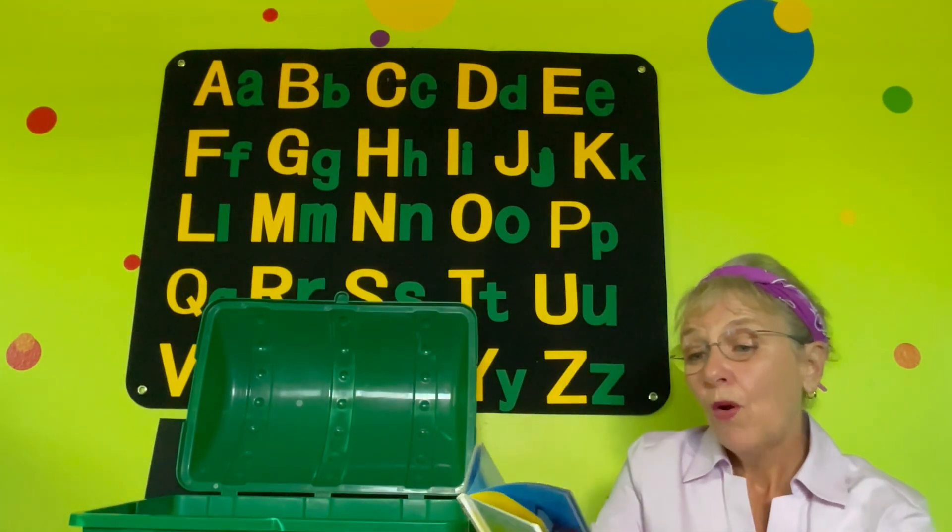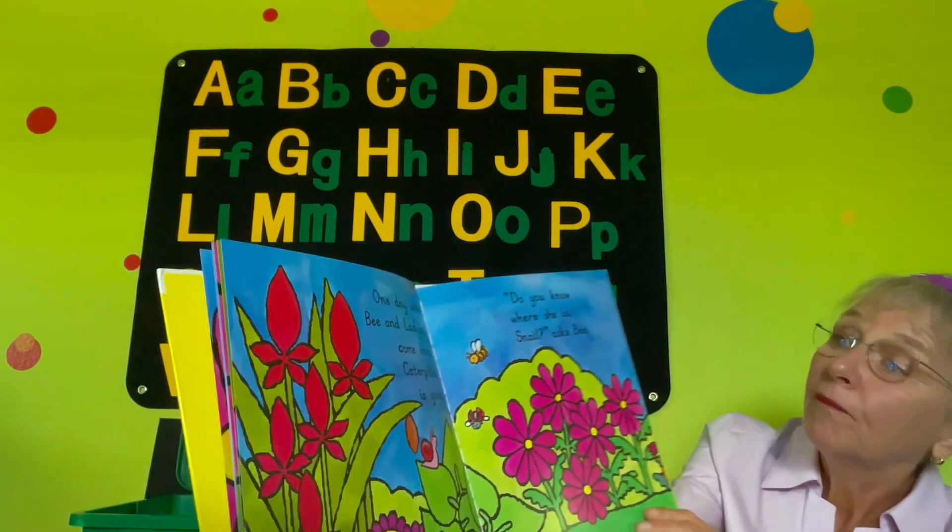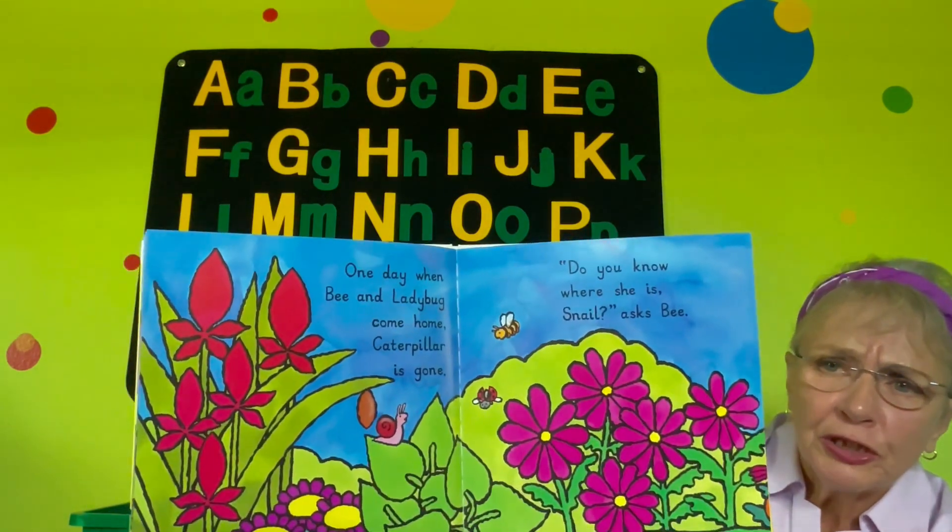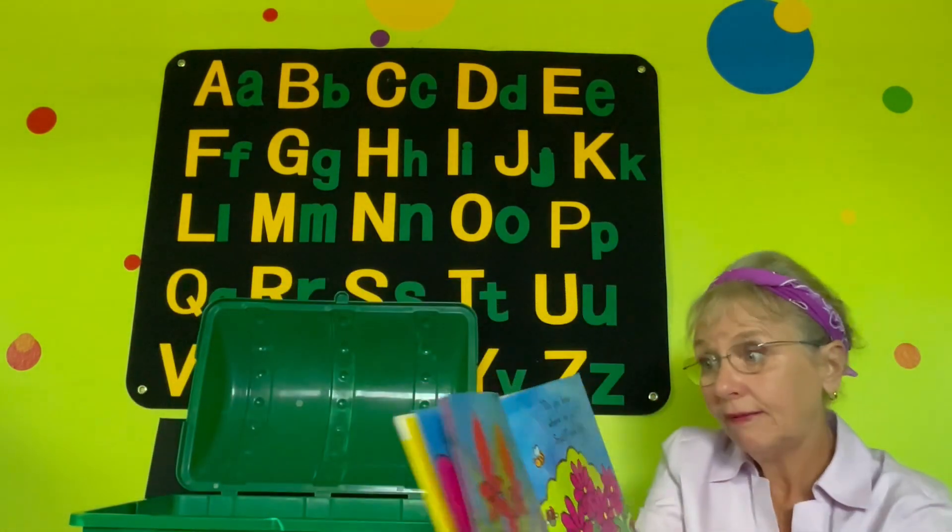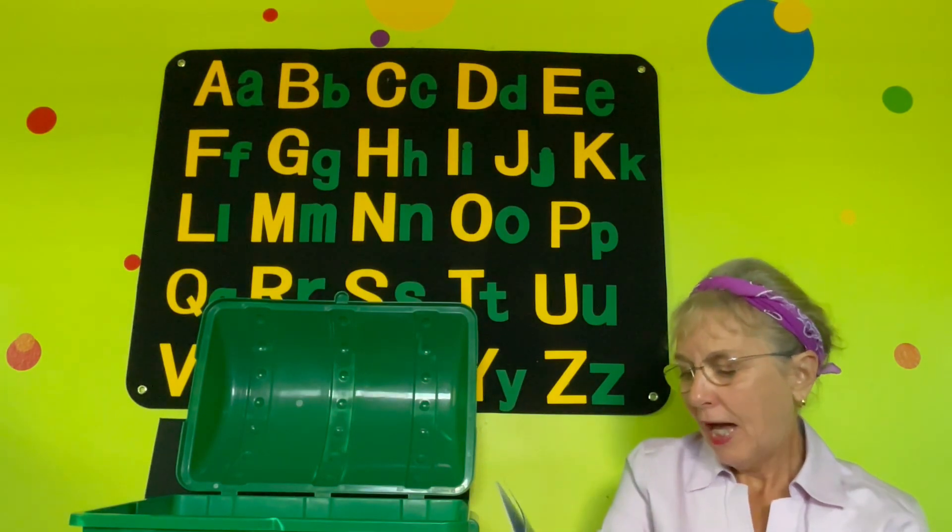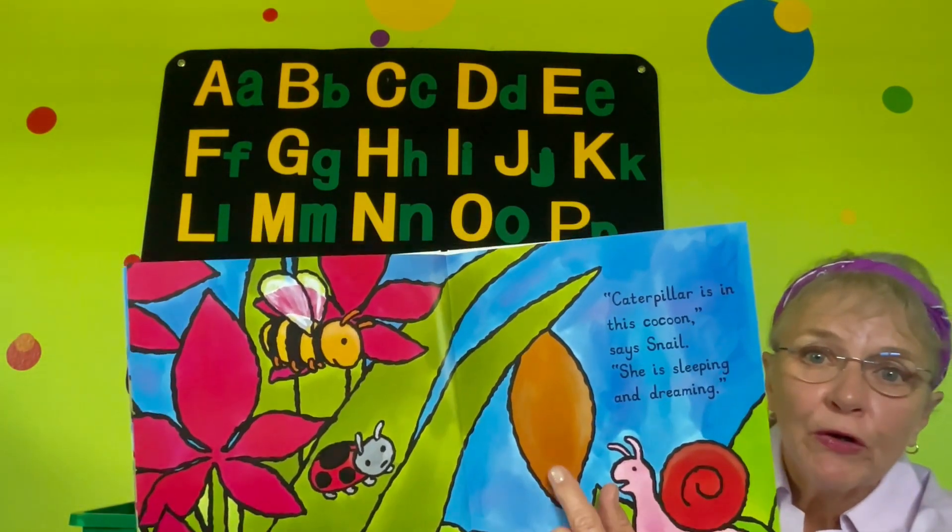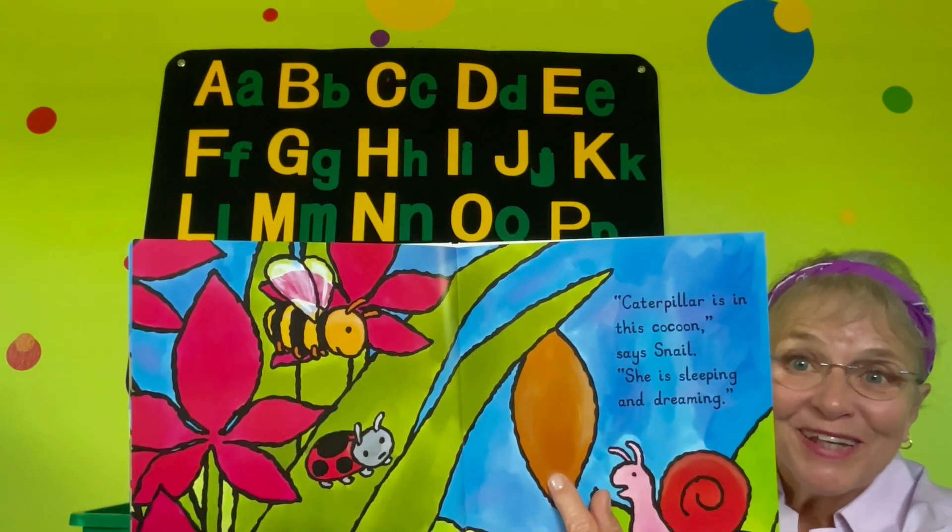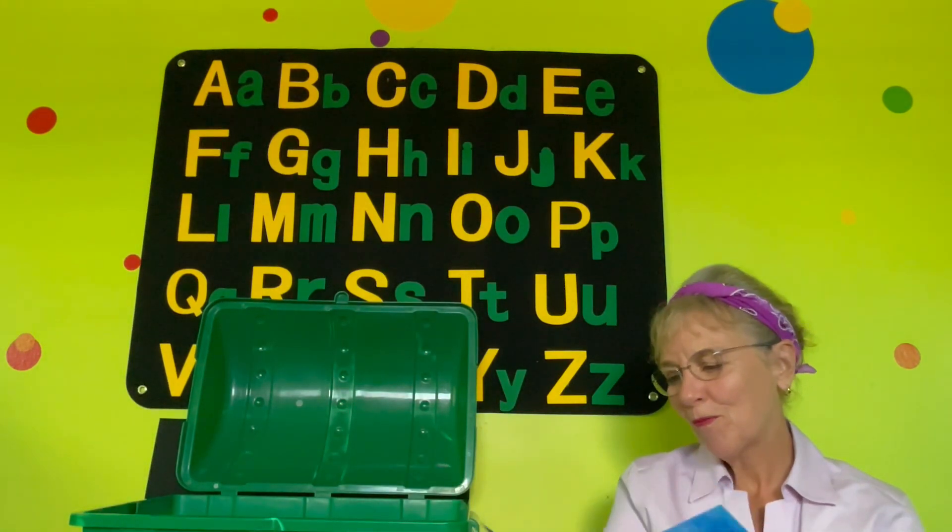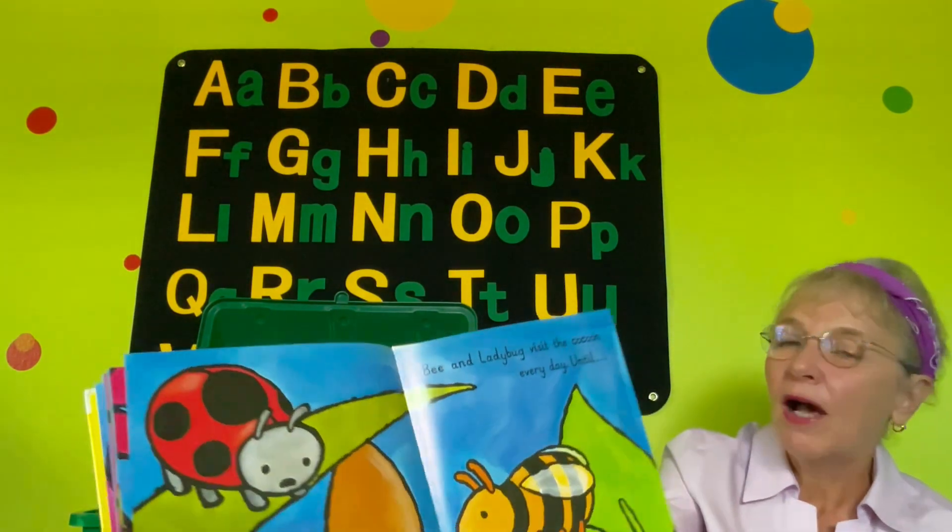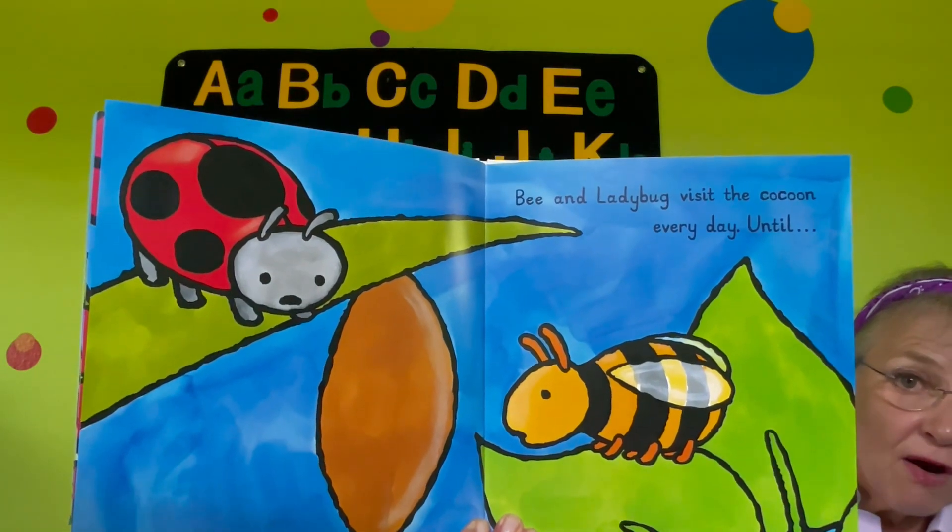One day when bee and ladybug come home, Caterpillar is gone. Do you know where she is, snail? Asks the bee. See the snail? Does snail know where she went? Caterpillar is in this cocoon, says snail. Cocoon, where she's sleeping and dreaming. Bee and ladybug visit the cocoon every day. They're waiting, aren't they?